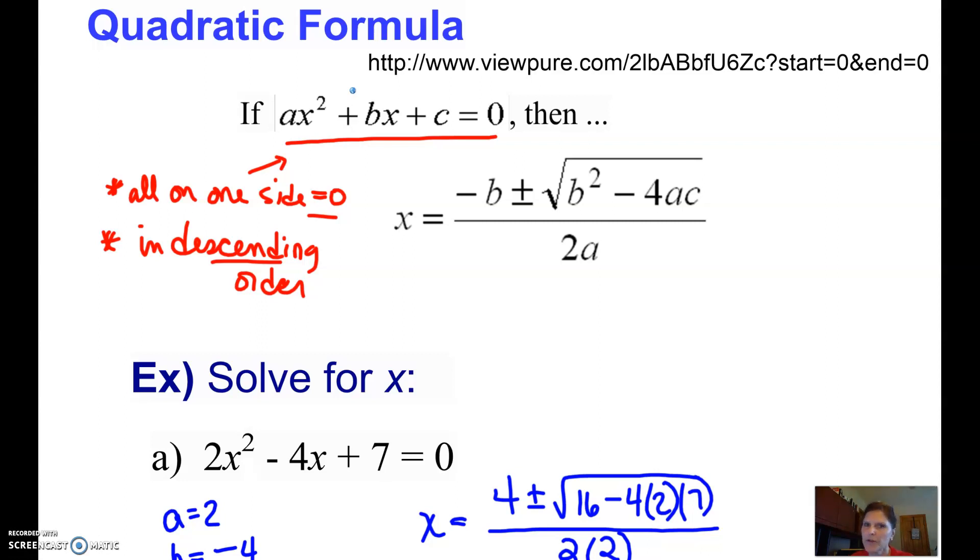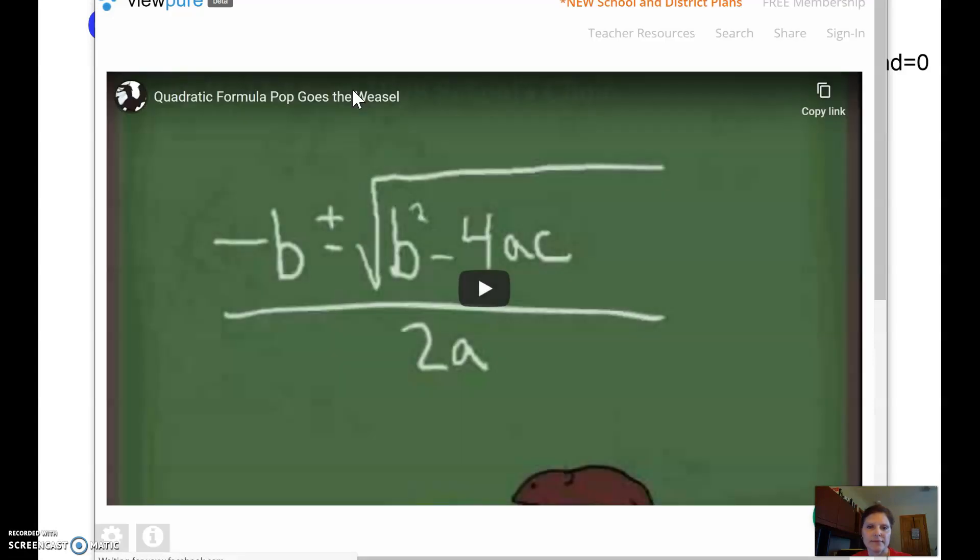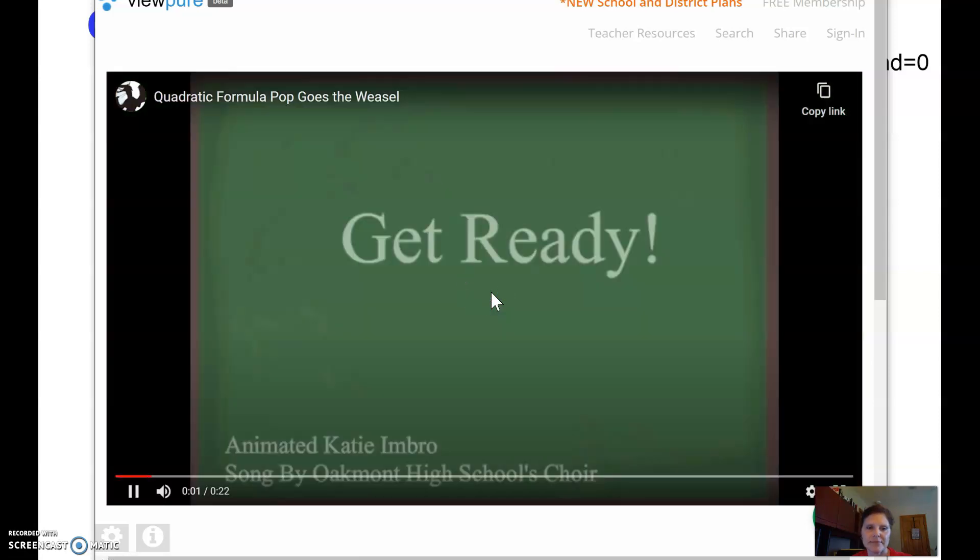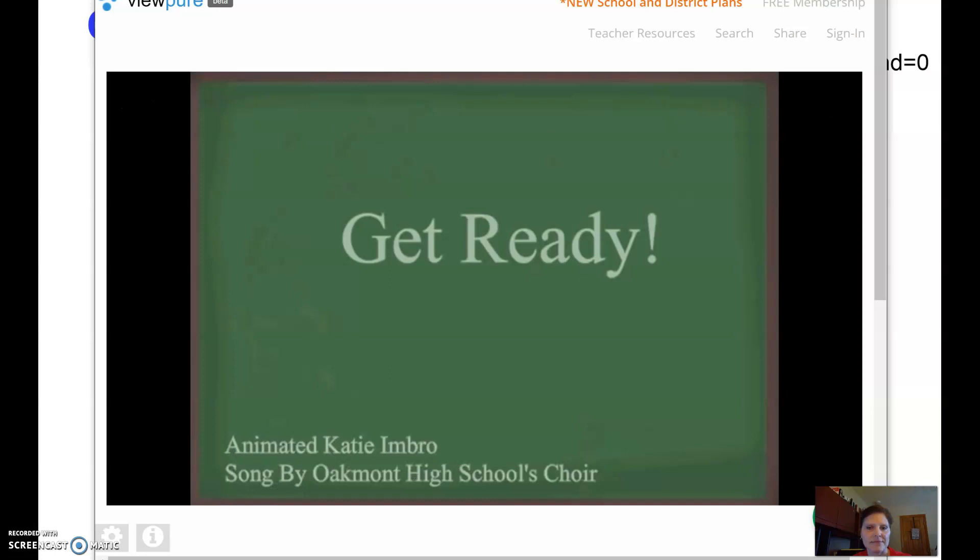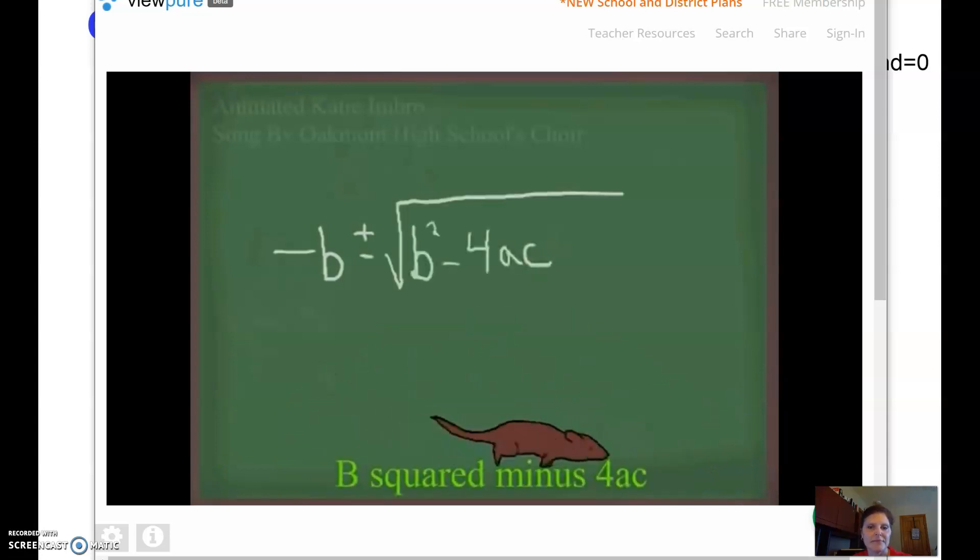I'm sure most of you are very familiar with this. Some of you might even know the Pop Goes the Weasel song. I've got a link here to a video. The quadratic formula is negative B, plus or minus the square root of B squared minus 4AC, all over 2A.